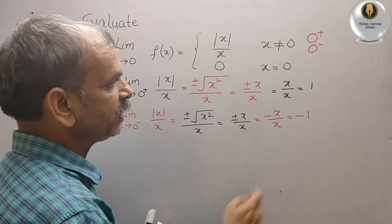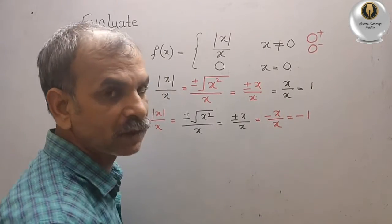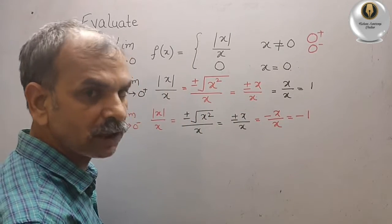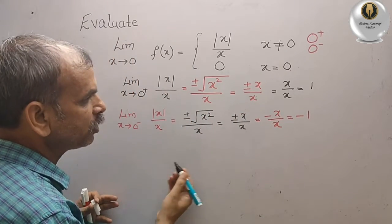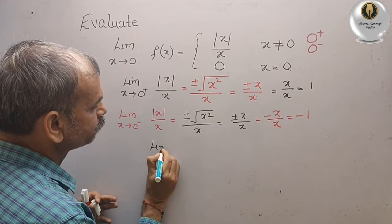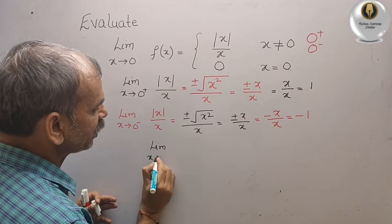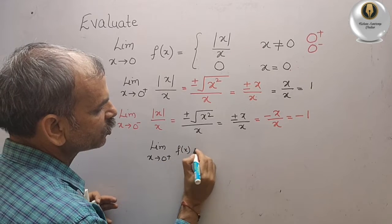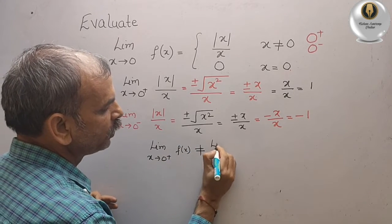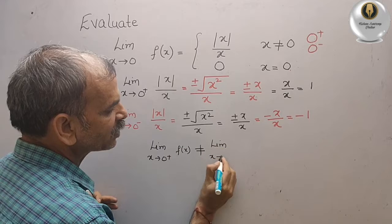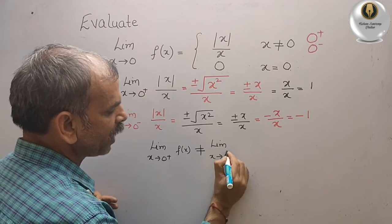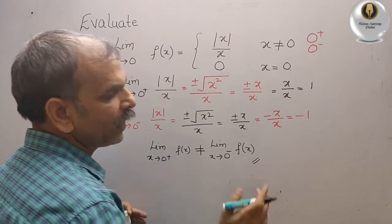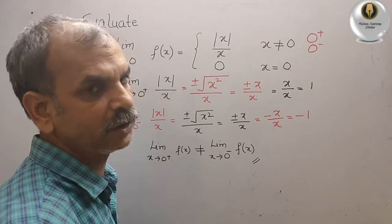We can see that 1 and minus 1 are not equal. So the limit as x tends to 0 plus of f(x) is not equal to the limit as x tends to 0 minus of f(x). Hence, the limit does not exist.